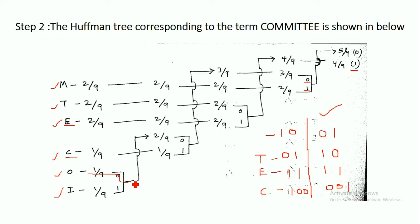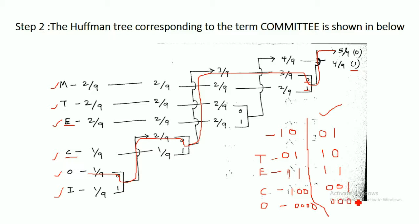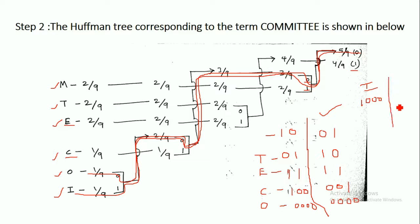For O, tracing the path gives 0, 0, 0, 0. Since all values are 0, the mirror image is also 0, 0, 0, 0. For I, tracing the path gives 1, 0, 0, 0. Taking the mirror image, the code word for I is 0, 0, 0, 1.